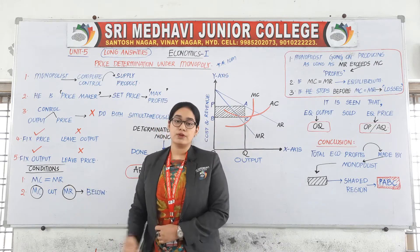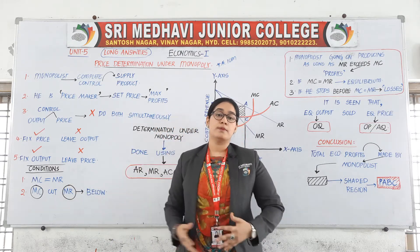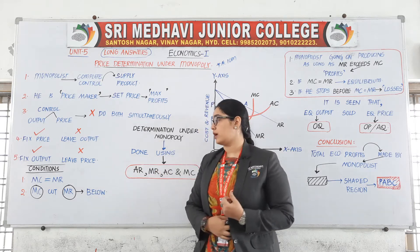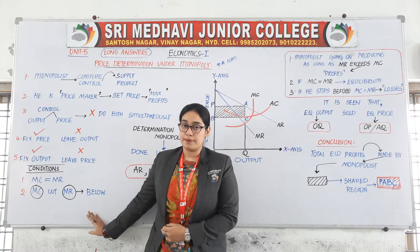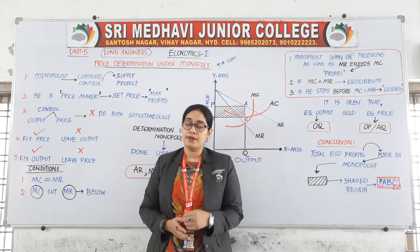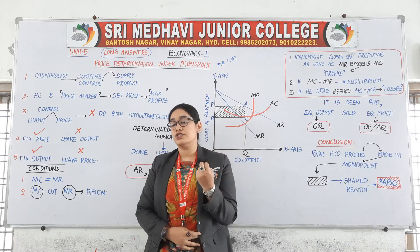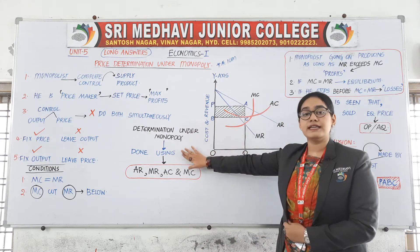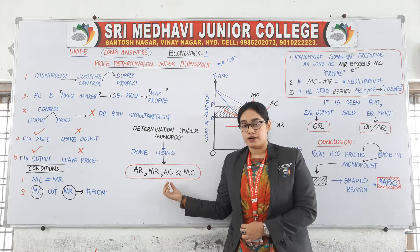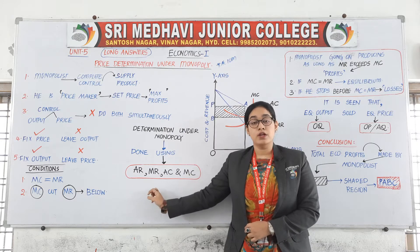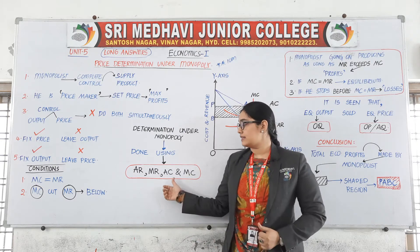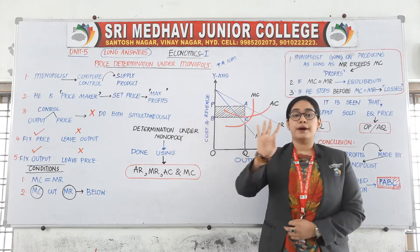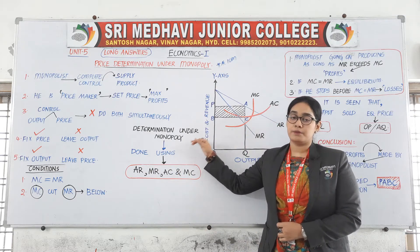The first condition is MC equals MR — marginal cost must be equal to marginal revenue. The second condition is that the MC curve should cut the MR curve from below. If we satisfy these two conditions, then only we can determine the price under monopoly. The determination of price under monopoly is done using AR, MR, AC, and MC — that is average revenue, marginal revenue, average cost, and marginal cost.